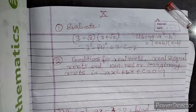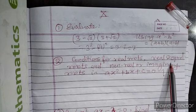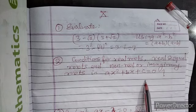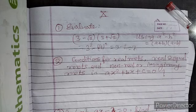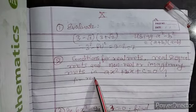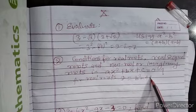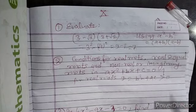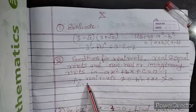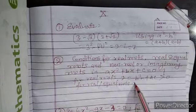Now, the next question: conditions for real roots, real and equal roots, and non-real or imaginary roots in the quadratic equation ax square plus bx plus c equal to 0. So, for real roots, D is equal to b square minus 4ac should be positive. You should remember these things. For real and equal roots,